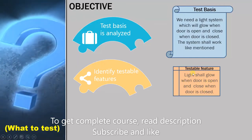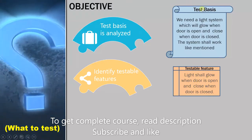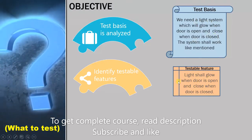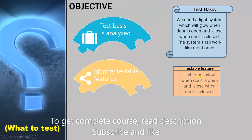So this is how the objectives work. First we analyze the test basis, then we identify the testable features. What do we do next?